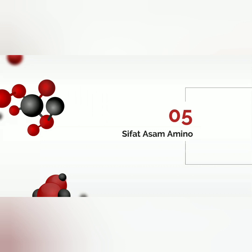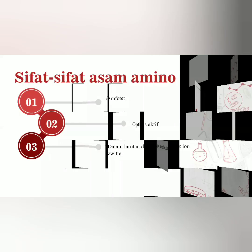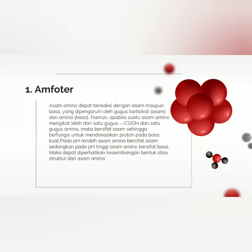Sifat-sifat asam amino. Yang pertama yaitu amfoter. Asam amino dapat bereaksi dengan asam maupun basa, yang dipengaruhi oleh gugus karboksil (asam) dan gugus amina (basa). Namun apabila suatu asam amino mengikat lebih dari satu gugus COOH dan satu gugus amina, maka bersifat asam sehingga berfungsi untuk mendonasikan proton pada basa kuat. Pada pH rendah, asam amino bersifat asam, sedangkan pada pH tinggi, asam amino bersifat basa.